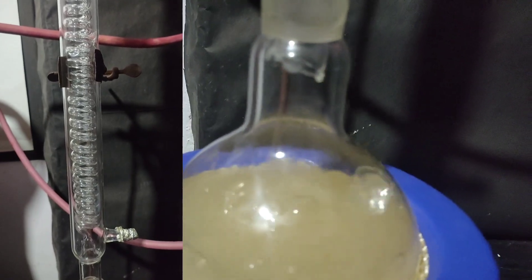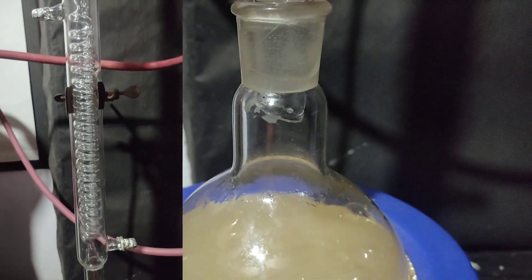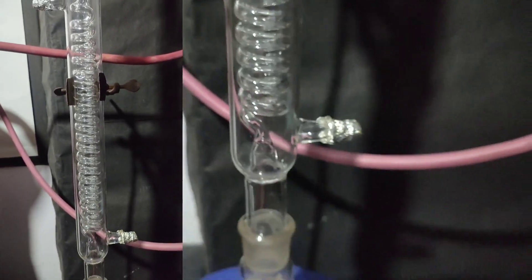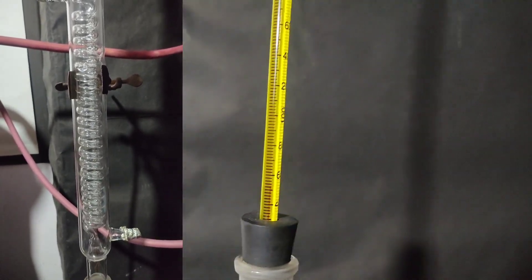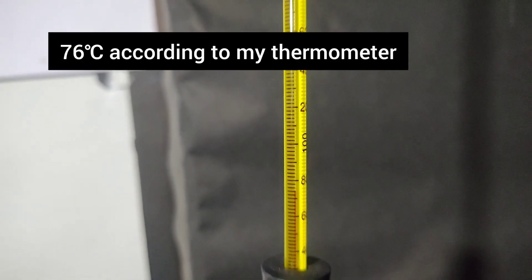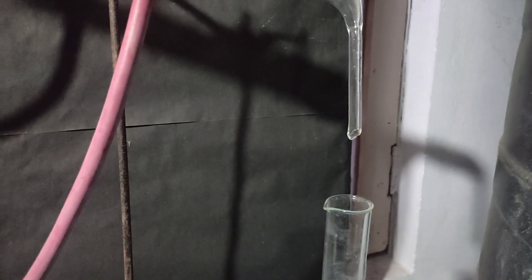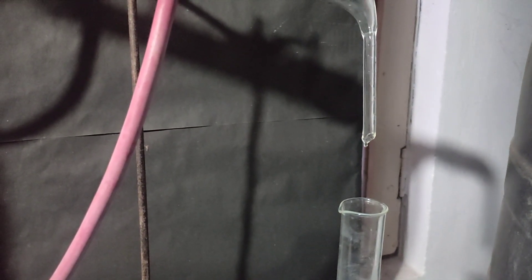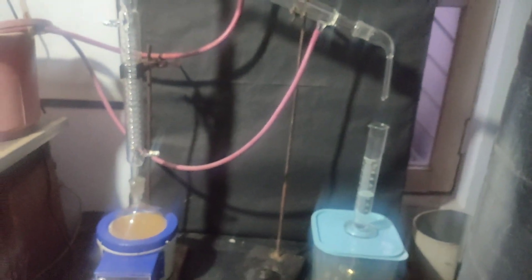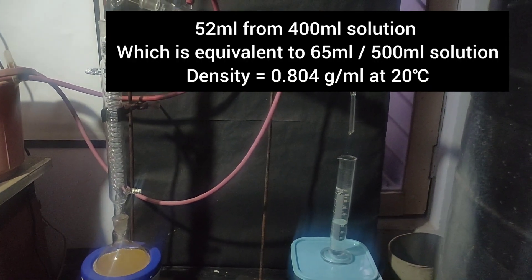This Graham's condenser is 30cm. You can see vapour condensing in the spirals and refluxing. At 78 degrees Celsius, we started receiving distillate.